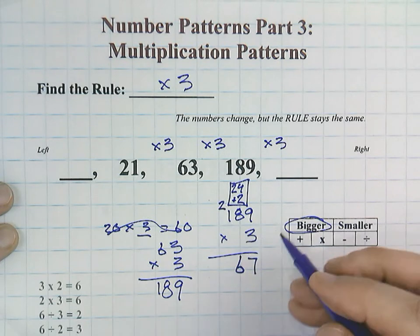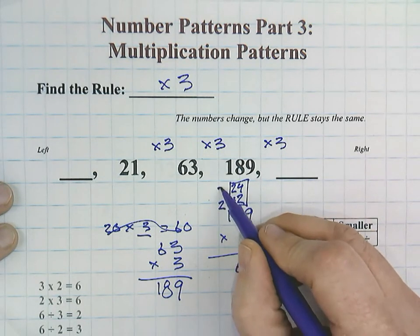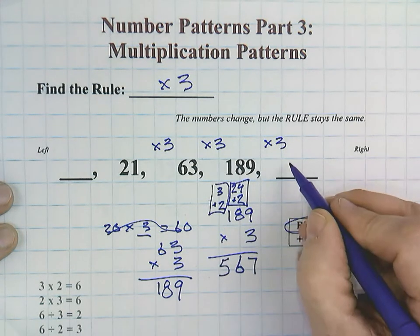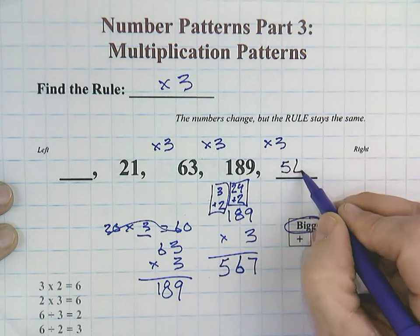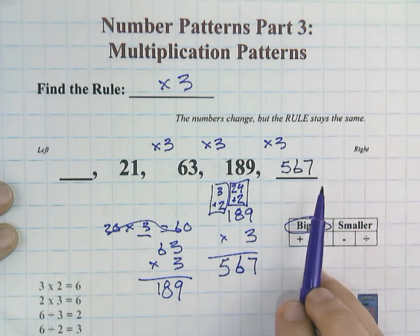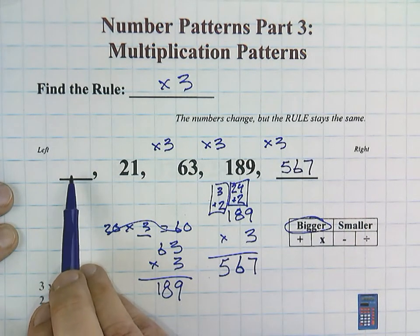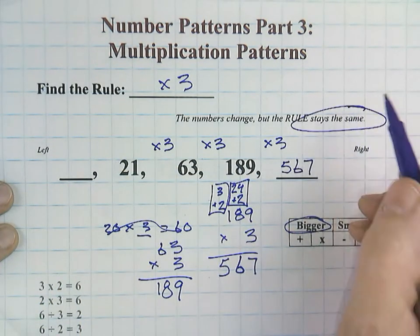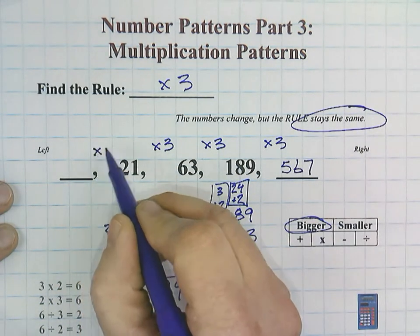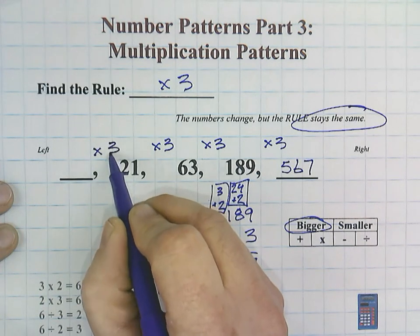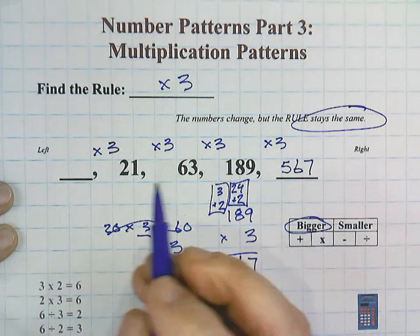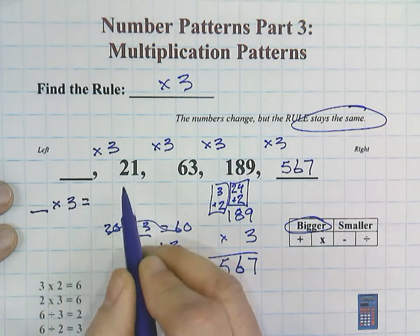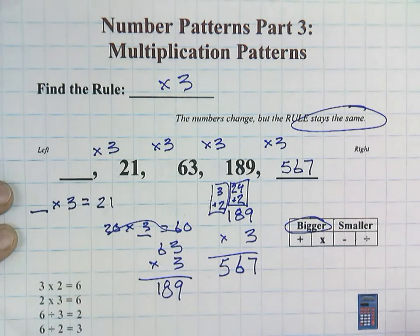24 and 2 would be 26. I'm going to regroup again. 3 times 1 is 3. And 3 plus 2 is 5. So that would be 567. But you'll notice over here, we have a blank that started the pattern. The same rule is going to apply. Remember, our rule stays the same. So this is still going to be times 3. In other words,